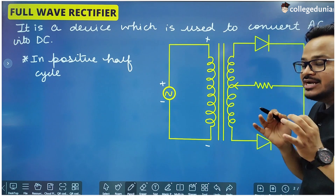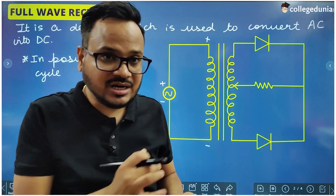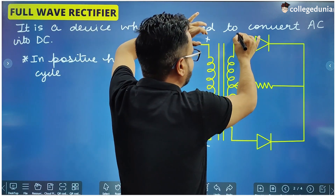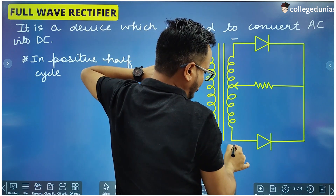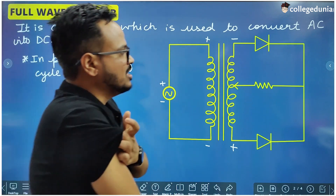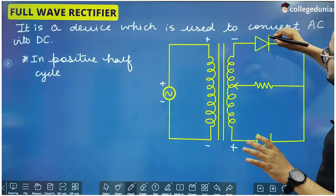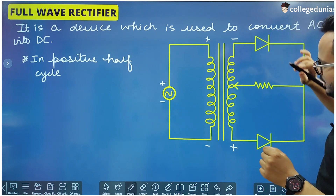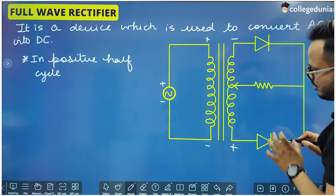Suppose this end of the input is positive and this end is negative. So this end of the secondary coil will also be positive and this end negative. Now, the transformer works on the principle of mutual inductance. Due to mutual inductance, if this end is positive, a negative charge will be induced here, and if this is negative, a positive charge will be induced here. Due to this, we can clearly see that this PN junction becomes reverse biased and this PN junction becomes forward biased.